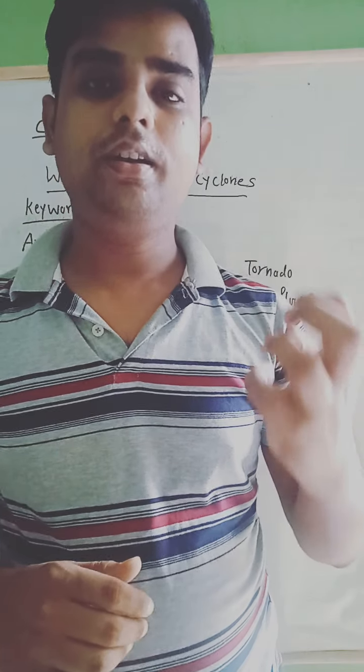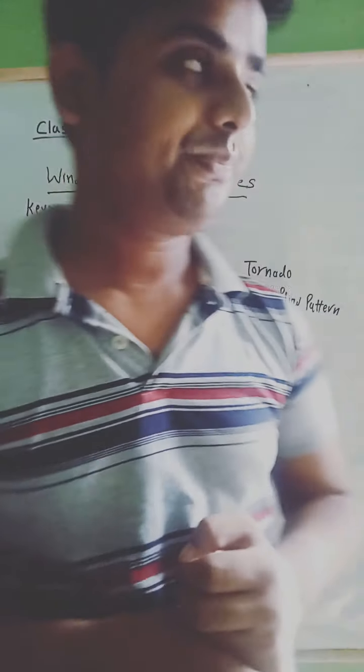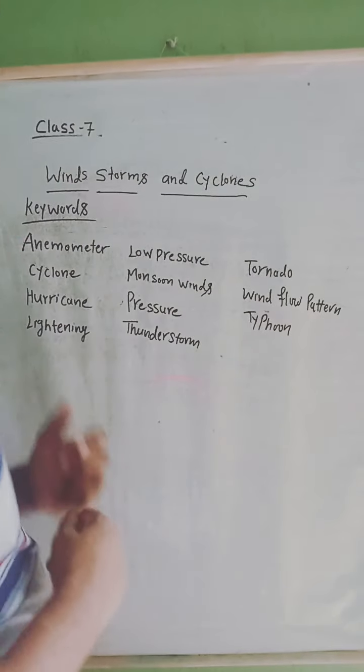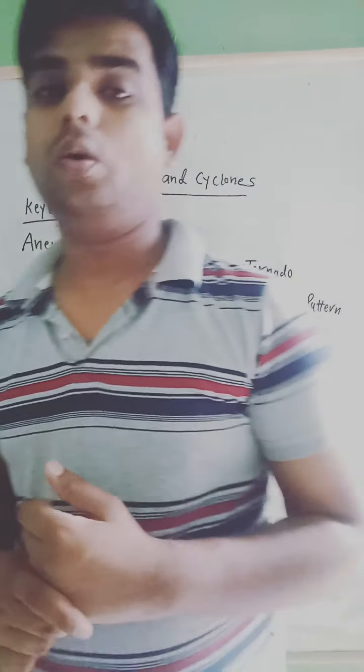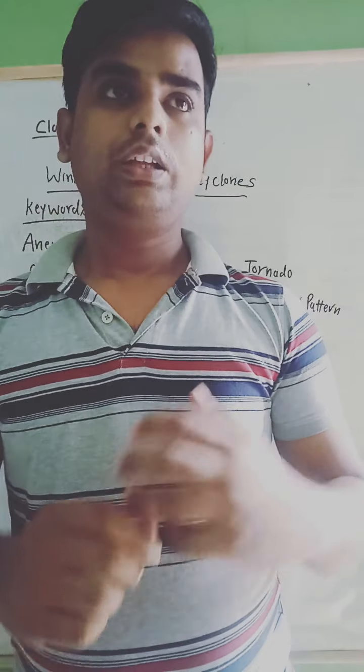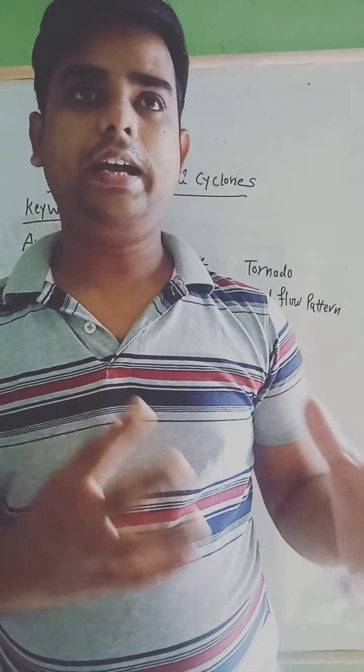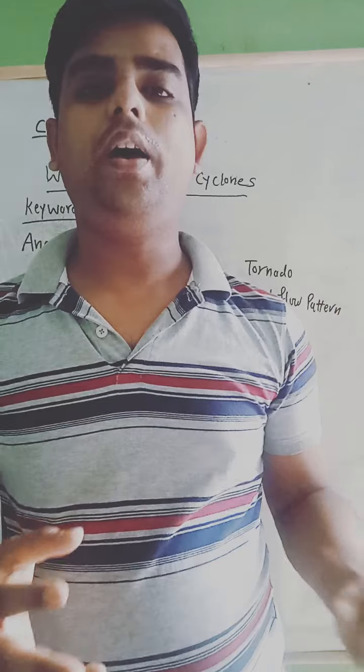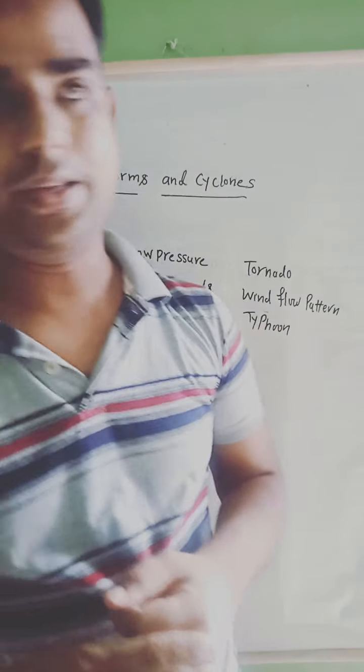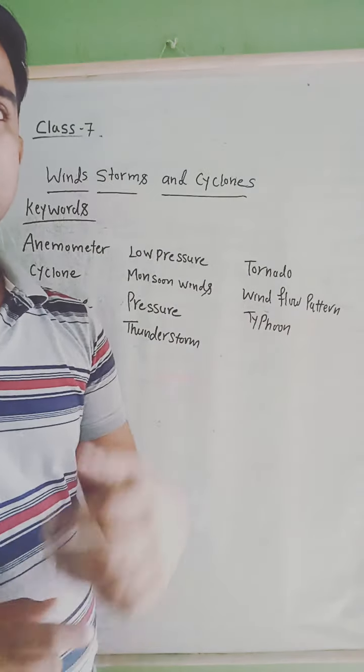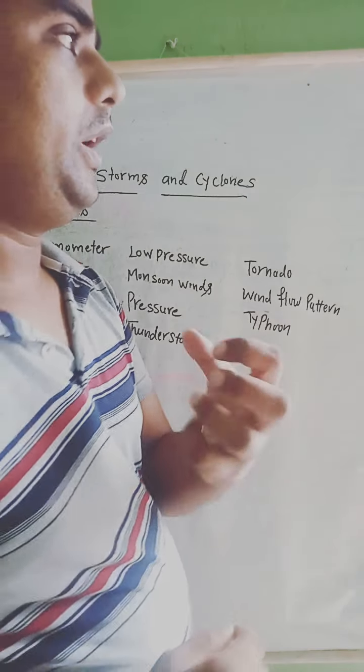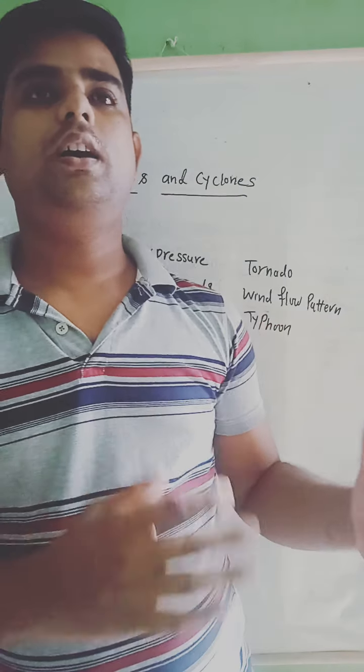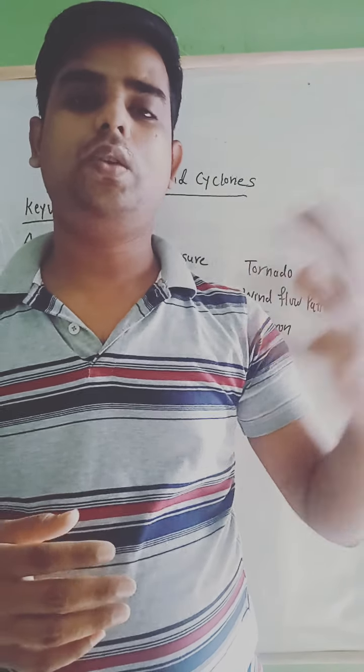Next is low pressure. Low pressure in the atmosphere is the pressure which is below average. Monsoon winds is a flow of winds from sea to lands in summer. Next is pressure. When we exert a physical force on an object, then it exerts pressure on it. This process is known as pressure.